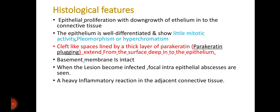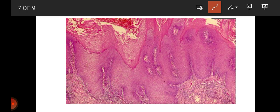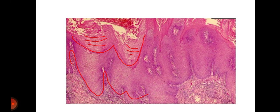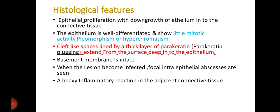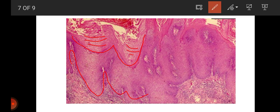The basement membrane is intact. Here you can see cleft-like spaces filled with parakeratin layers, and the basement membrane is intact throughout the epithelium. When the lesion becomes infected, focal intra-epithelial abscesses are seen. A heavy inflammatory reaction in the adjacent connective tissue is also present. Here you can see the intense inflammatory reaction in the adjacent connective tissue.